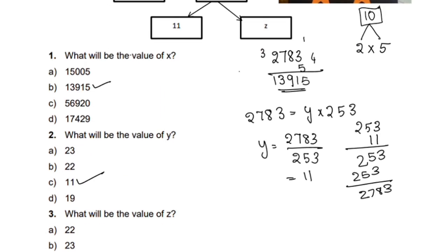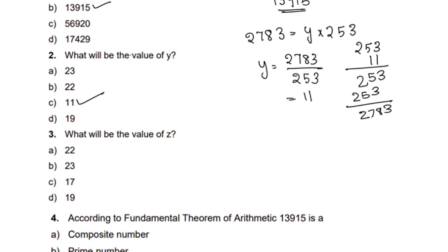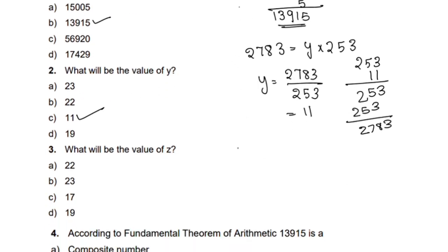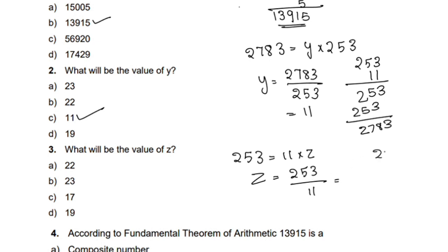The third question: what will be the value of z? 253 is equal to 11 into z, so z equals 253 divided by 11.